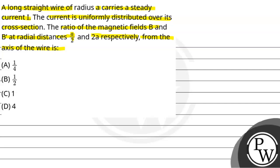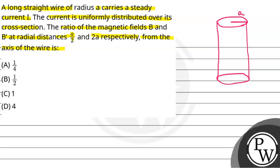So according to the question, we are saying that there is a long straight wire, which we draw in a cylindrical form. This cylindrical shape is a long straight wire with a radius of A. This wire has a steady current I flowing through it, which is uniformly distributed over the cross-section. We simply calculate the ratio of magnetic field B and B' at radial distances A/2 and 2A.